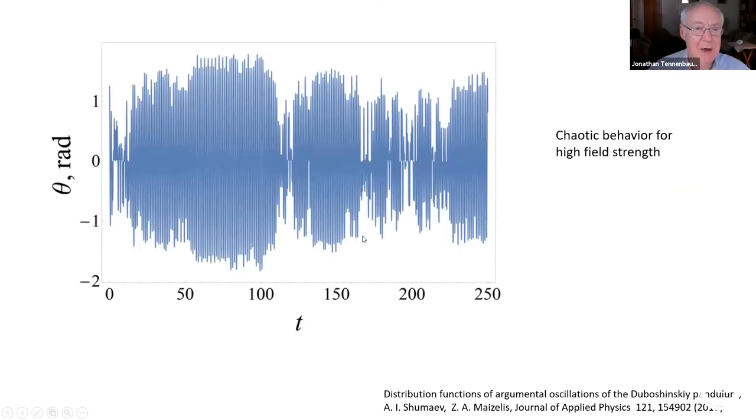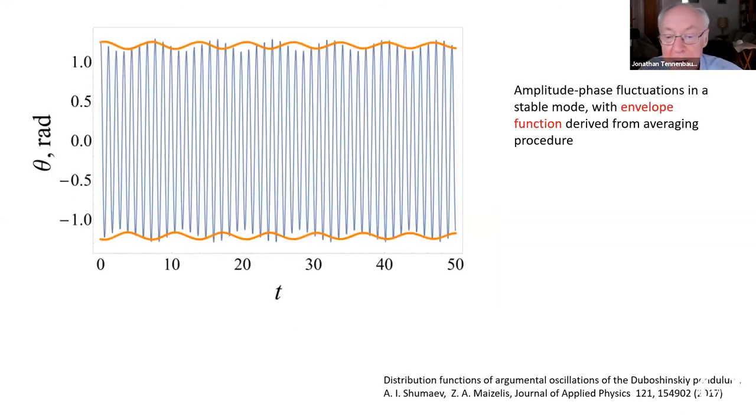Here you see the example of what I mentioned when the amplitude of the field, the strength of the field is very large, you get this chaotic behavior. Here you see, this is now a numerical simulation done by Shumayev and Meizelis in Ukraine, where you see an envelope function. What's generally done in the mathematical study of these systems is an averaging process. You average the phase, you assume that the phase and amplitude are relatively slowly changing, which is not strictly speaking true, but you assume it and you get an approximation, which Shumayev calls an envelope function. And here you see the envelope function and the simulated behavior of the system. You don't agree exactly, but the fit is not too bad.